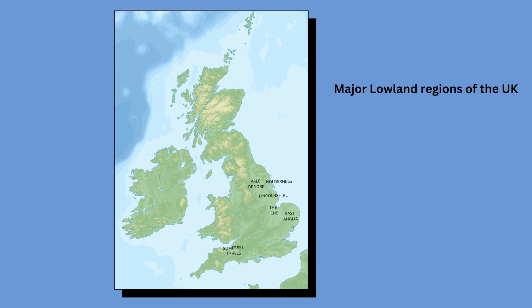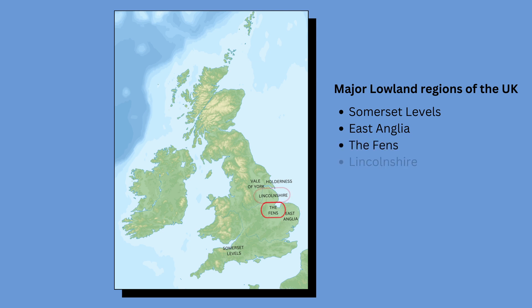Similarly, you should be familiar with the names of lowland regions. They include the Somerset Levels, East Anglia, the Fens, Lincolnshire, the Vale of York and Holderness.